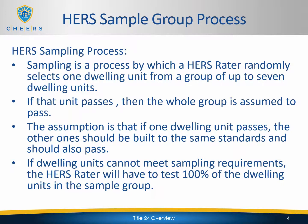If dwelling units cannot meet the sampling requirements, then the HERS rater will have to test 100% of the dwelling units in the sample group. There's a safety built in there and we'll cover that failure process. If you get a failure during your testing, what do you do next? Again, this is based on the installing contractor already having done their tests for the CF2Rs. The testing is already supposedly done — you're verifying that test, and if the test you perform randomly passes, then the rest should be in a passing state.